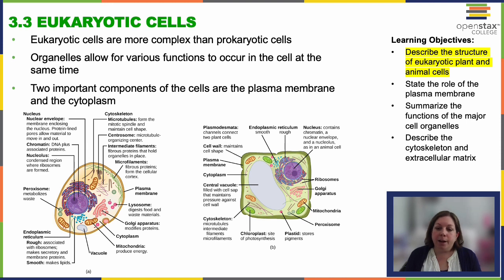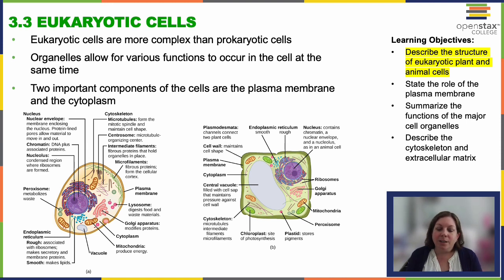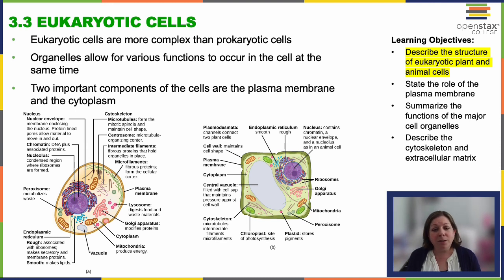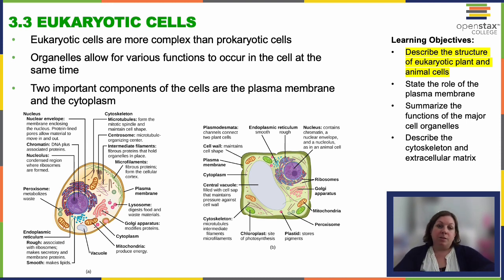There are two prominent categories that really stand out: animal cells and plant cells, and they're featured on this slide. But that's not the only kind of cells. These two cell types share a lot of fundamental similarities, while also having some really unique adaptations tailored to their respective roles within the larger biome.